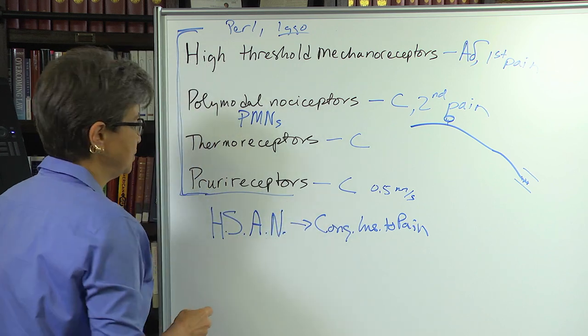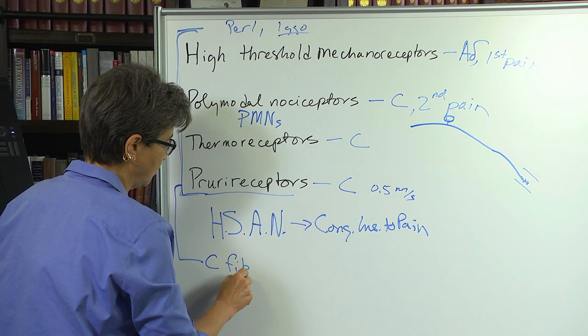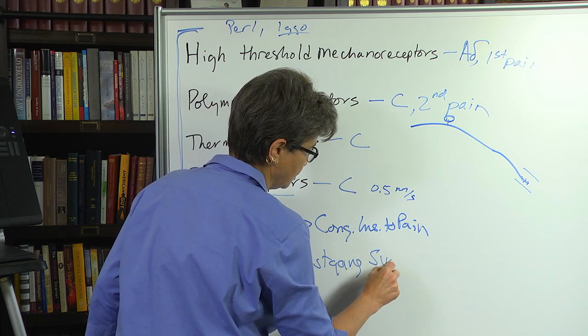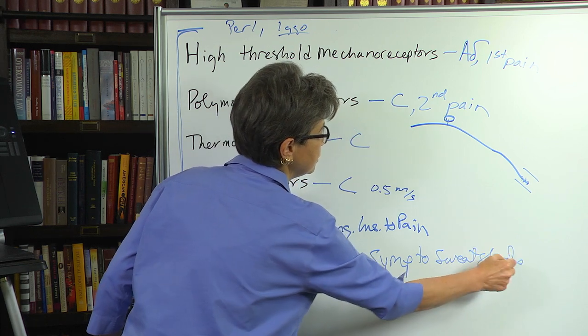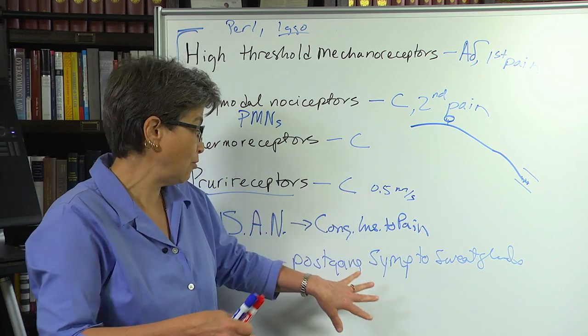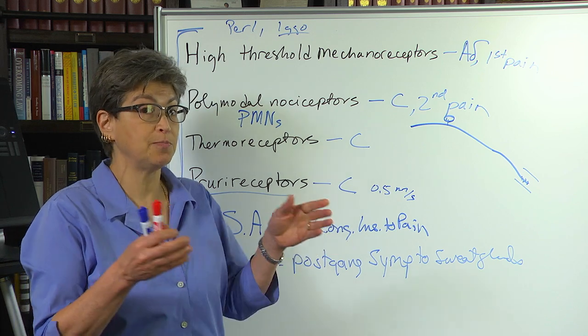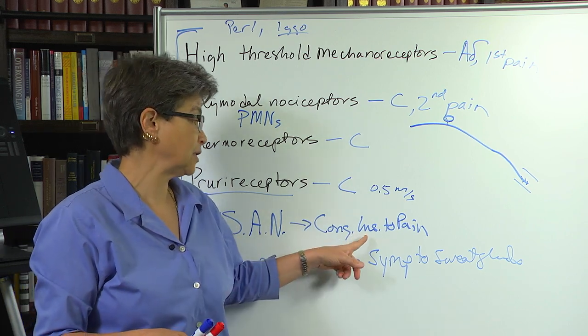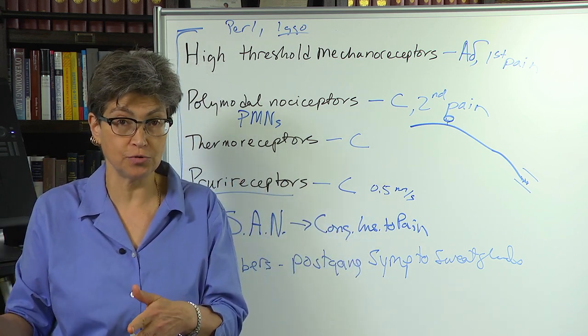And there's one other group of fibers that's also affected, and they're not afferents at all. But these are C fibers that are postganglionic sympathetic fibers to the sweat glands. So, for instance, the condition of congenital insensitivity to pain can come with or without damage to these postganglionic sympathetic fibers. If these fibers are damaged, then the person has not only an insensitivity to pain, but they do not sweat. If these are not damaged, then the person has congenital insensitivity to pain without what's called anhidrosis, without the lack of sweating.